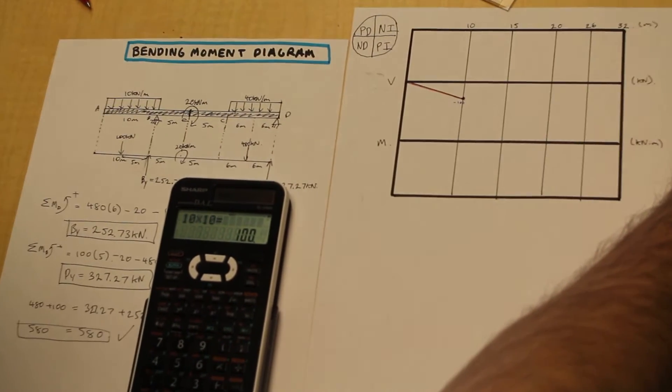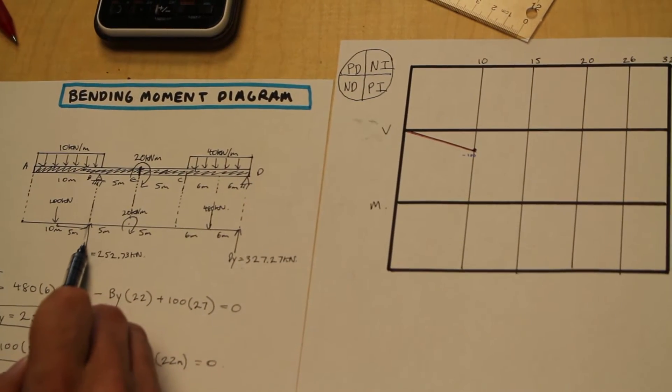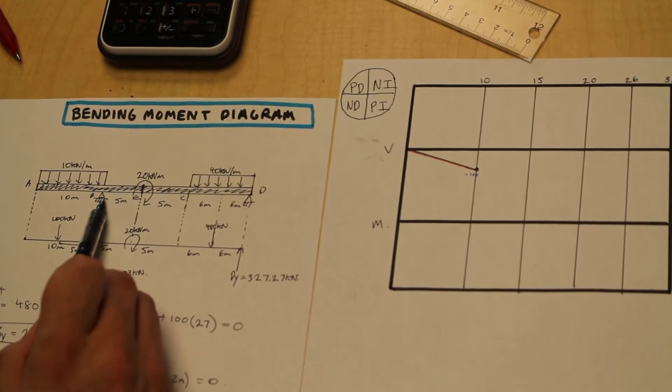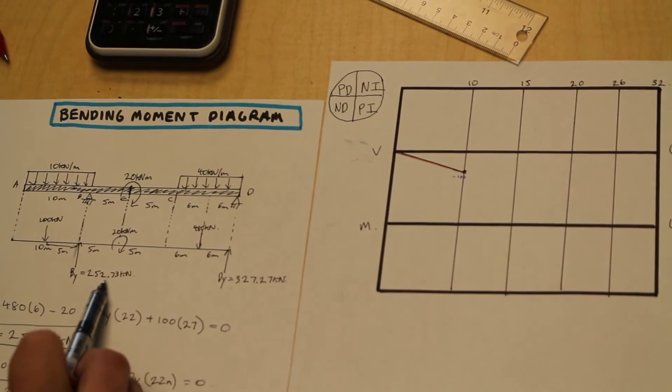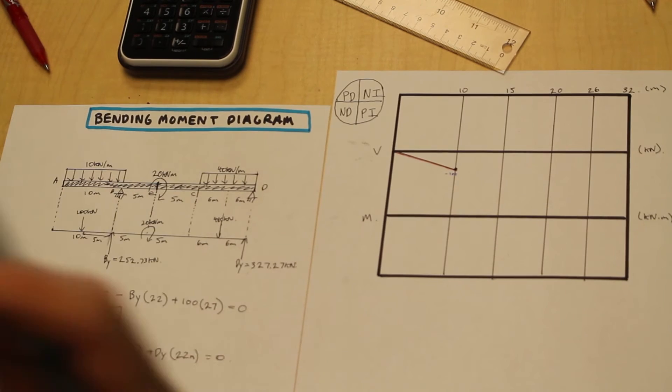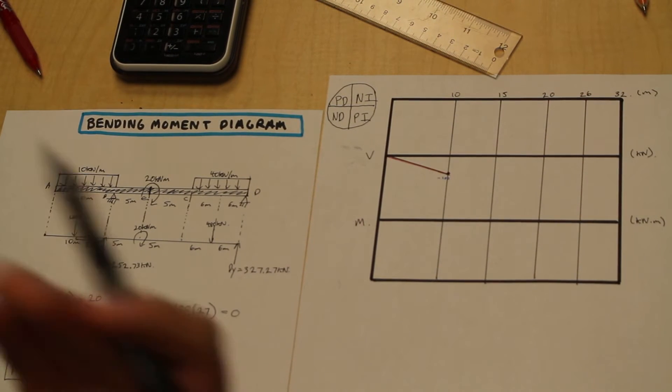So what do we do now? Well, all we have to do is we have to look to see if there are any more external forces acting at point B. And it's a reaction, so there is. We have a reaction, as we saw before, of 252.73 kilonewtons going up. So up we have considered as our positive direction. That's just a general convention. Down is negative and up is positive.